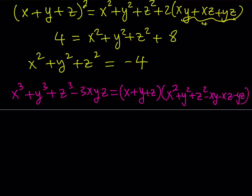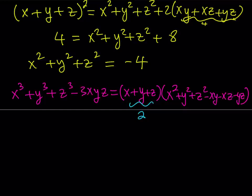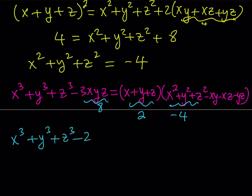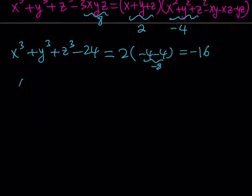Now, what do we know? We know that x plus y plus z is equal to 2, so this factor is 2. We know the sum of the squares — we just calculated it — so that's negative 4. And we're going to be subtracting another 4, and xyz is equal to 8, so that gives us 24. So, x cubed plus y cubed plus z cubed minus 24 equals 2 times the quantity negative 4 minus 4, which is negative 8, giving us negative 16 on the right. Adding 24, we get x cubed plus y cubed plus z cubed is equal to 8.